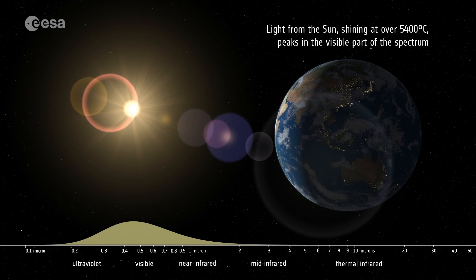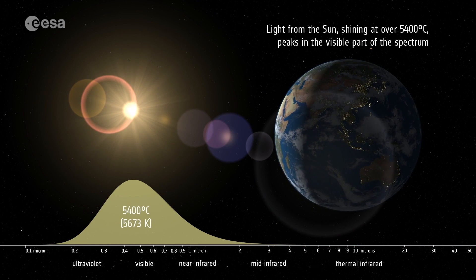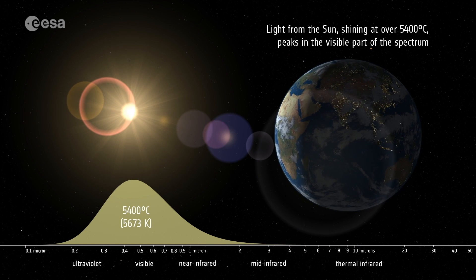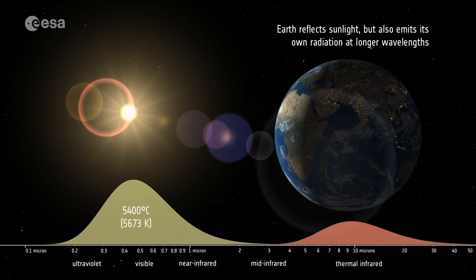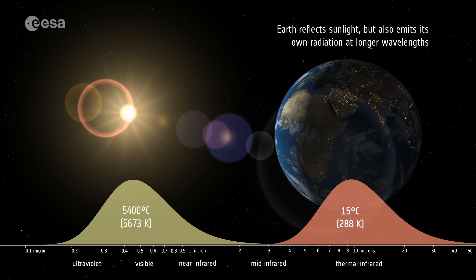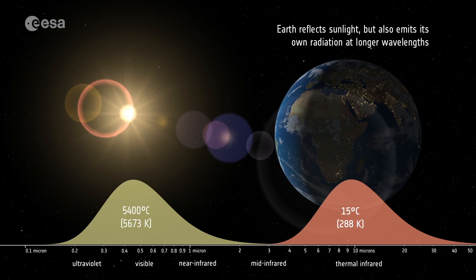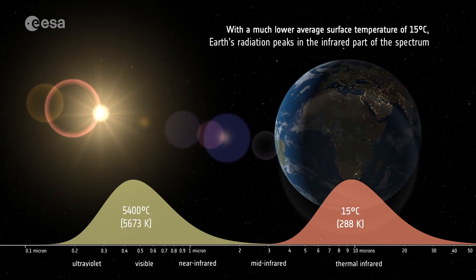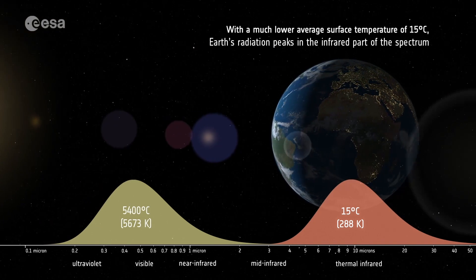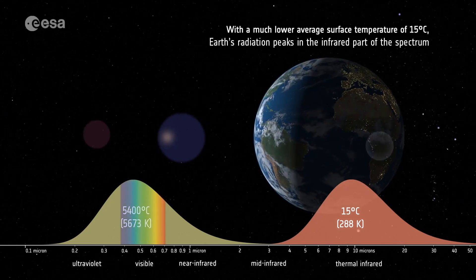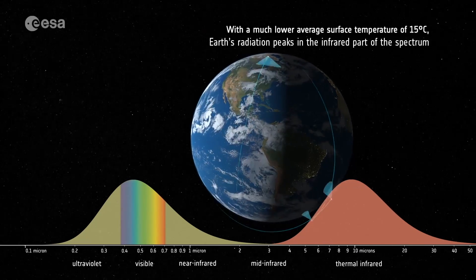Light from the Sun shining at over 5,400 degrees Celsius peaks in the visible part of the spectrum. Earth reflects sunlight but also emits its own radiation at longer wavelengths. With a much lower average surface temperature of 15 degrees Celsius, Earth's radiation peaks in the infrared part of the spectrum.